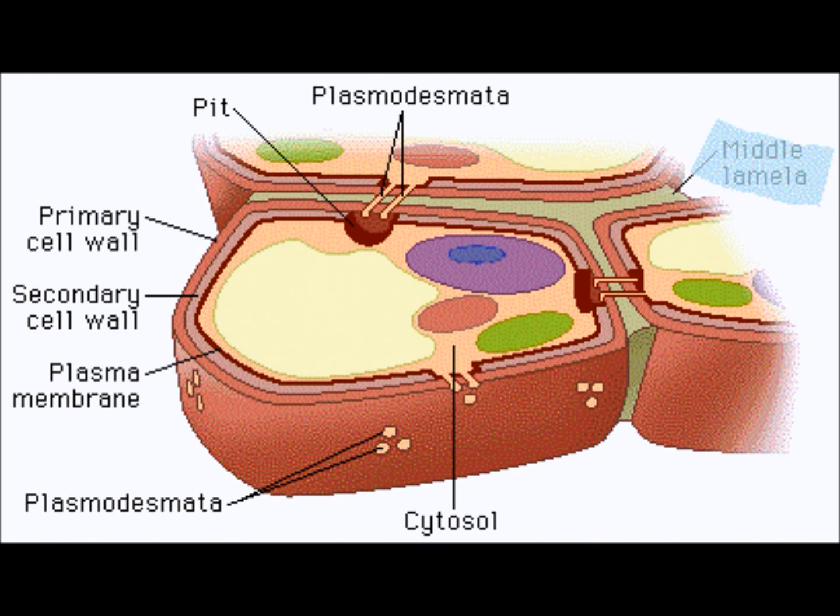Moving on, the plant cell wall is composed of a primary wall and a secondary wall. The primary wall surrounds growing cells, or cells capable of growth, and a secondary wall is a thickened structure containing lignin and surrounds specialized cells such as vessel elements or fiber cells.